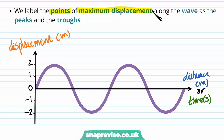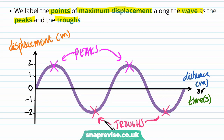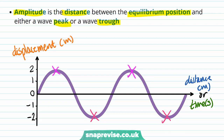We label the points of maximum displacement along the wave as the peaks, and the points where we have minimum displacement — the lowest points — are called troughs. The amplitude is the distance between the equilibrium position and either a wave peak or a wave trough. So to get the amplitude, we just need to measure the distance from a peak to the equilibrium position, or the distance from a trough to the equilibrium position.